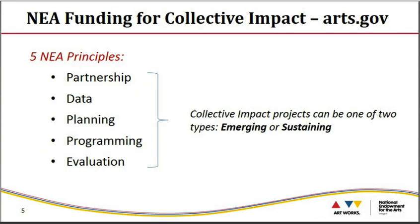NEA Collective Impact Grants can either be for emerging projects — projects that are in the initial phase of work and/or are establishing an arts education plan — or for sustaining projects that already have an arts education plan in place and are advancing critical strategies to increase access to arts education. The NEA guidelines define five principles for collective impact projects: partnerships, data, planning, programming, and evaluation. All projects, whether emerging or sustaining, should embrace these principles, which may occur at any point during the requested period of support for NEA funding.